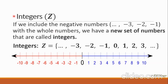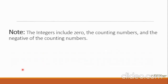The next group is called integers, denoted by Z. For integers, we are now including the negative numbers plus the whole numbers. The set Z equals dot dot dot, with the negative numbers on the left, 0 in the middle, and the positive numbers on the right, as seen in the number line. The integers include 0, the counting numbers, and the negatives of the counting numbers.